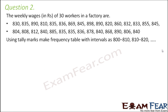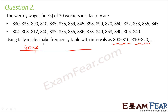Question number two: the weekly wages of 30 workers in a factory are given. Using tally marks, make a frequency table with intervals 800 to 810, 810 to 820, and so on. The table will have three columns: groups (class intervals), tally marks, and frequency.